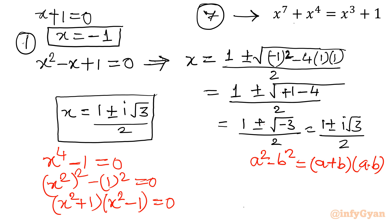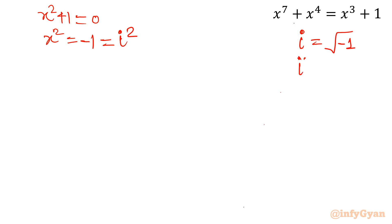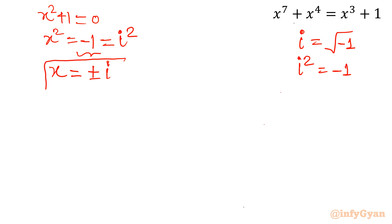From x² + 1 = 0, we get x² = -1. Since -1 = i², we can write x² = i², and taking square roots of both sides gives x = ±i. This gives us two more complex solutions, bringing our total to 5 solutions so far.